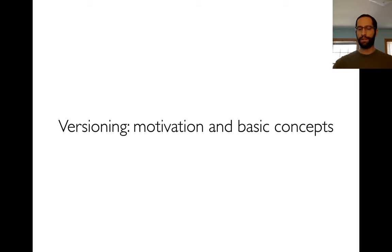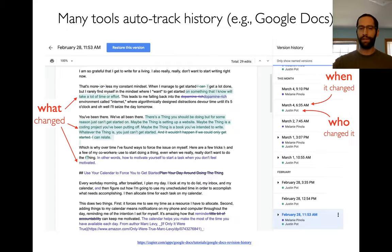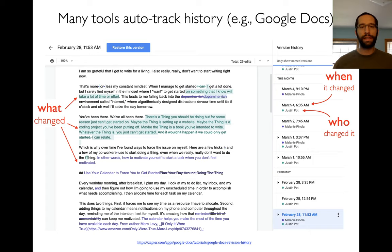Let me motivate a bit more why we care about different versions — there are lots of use cases. In the next video we'll look at a real tool, Git. For now I'll keep things general. Versions are really about tracking history — different versions or checkpoints of some piece of work over time. Most of you have probably seen this in tools that automatically track history, like Google Documents, which has an option to see history.